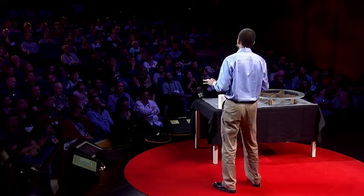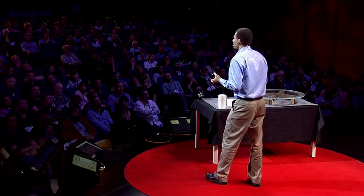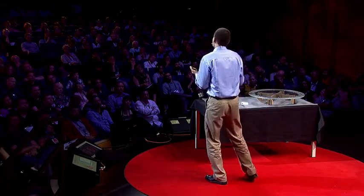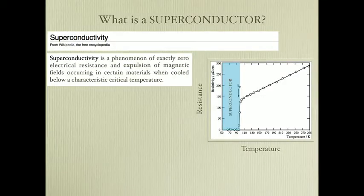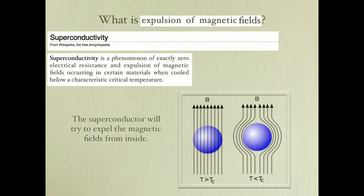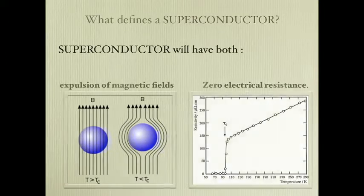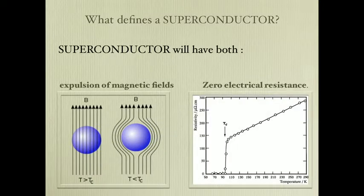Superconductors don't like magnetic fields. A superconductor will try to expel magnetic fields from the inside, and it has the means to do that by circulating currents. The combination of both effects — the expulsion of magnetic fields and zero electrical resistance — is exactly what defines a superconductor.